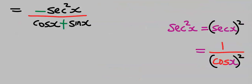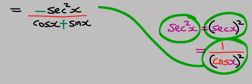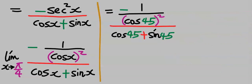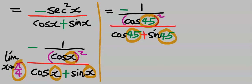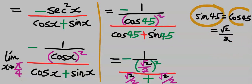Using the trigonometric identity, sec²x is the same as (sec x)² which equals 1/cos²x. We use this to replace the term at the numerator. Taking the limit, we replace x with π/4, which is 45 degrees. cos 45 equals √2/2.